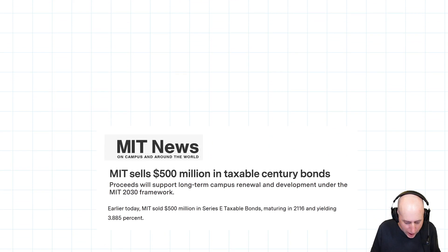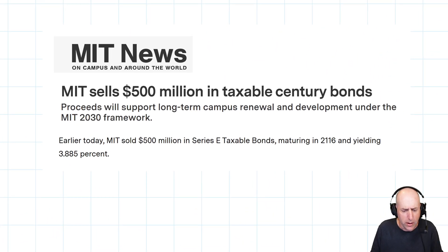Let's talk bonds. Here's a news story: MIT sells $500 million in taxable century bonds. Earlier today, MIT sold $500 million in Series E Taxable Bonds, maturing in 2116 and yielding 3.885%. Let's call it 4% for our conversation.